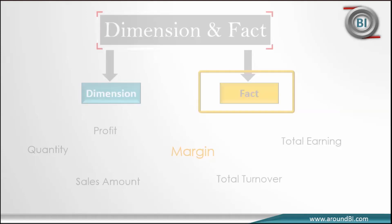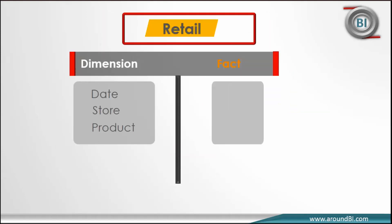Recalling our retail business example, we have quantity and unit price as facts, and date, store, and product as dimensions. Generally, we store dimensional data into dimension tables and numeric measures into fact tables.